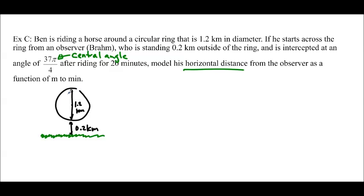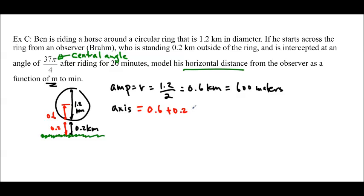So the first thing that we could find is the amplitude. We know the amplitude is going to be the radius. And the radius is 1.2 divided by 2. So 0.6 kilometers. And it says to do it in meters to minutes. So we're going to have to convert that to 600 meters. So just be wary of your units. The axis is going to be from the middle. So it's where the axle is, right? That's the middle here. So this distance here is 0.6. And then we add the 0.2. And that gives us the axis. So it's 0.6 plus 0.2 kilometers, which gives us 800 meters.